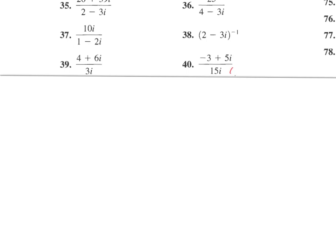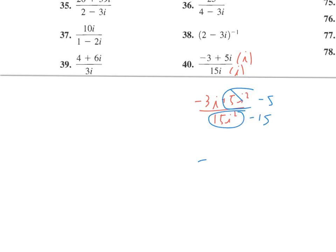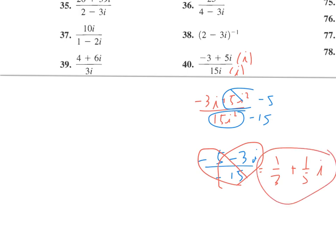Numbers 39 and 40: we need to get i out of the denominator, but since there's no adding or subtracting in the denominator we just multiply by i. The denominator becomes 15i squared, and the numerator becomes negative 3i plus 5i squared. Turning i squared into negative one: negative 5i squared becomes negative 5, the denominator becomes negative 15. So we get negative 5 minus 3i over negative 15. Dividing individually: the real part reduces to one-third and the imaginary part to one-fifth i.